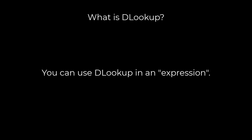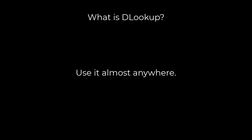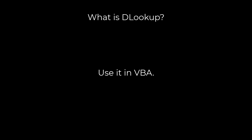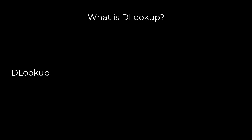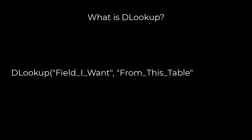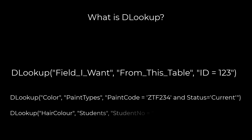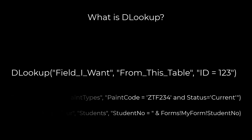DLOOKUP is also an expression, which means that in the Microsoft Access world you can use it just about anywhere — on a form, in a query, or in VBA — and you use almost identical syntax between all of those contexts. That makes it extremely powerful. In its basic form, DLOOKUP is very simple: you specify the field name you want as the first argument, the table or query name as the second argument, and the criteria you want to use to retrieve that value as the third argument.